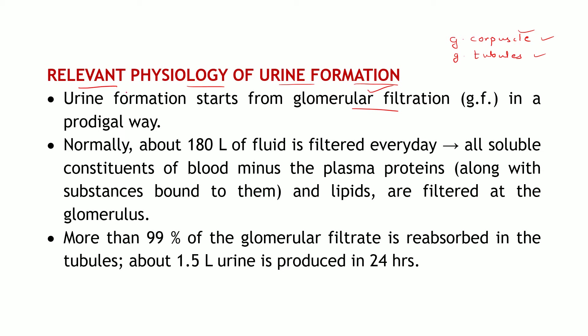This process of glomerular filtration begins in a prodigal way — meaning a wasteful way. Why is it called wasteful? Because approximately 180 liters of fluid gets filtered out. Is all content of the blood getting filtered? No, only the soluble constituents of the blood get filtered, excepting the plasma proteins. Plasma proteins will not get filtered out, nor will anything bound to plasma proteins. Lipids, being larger in size, also do not get filtered, and blood cells are also not filtered.